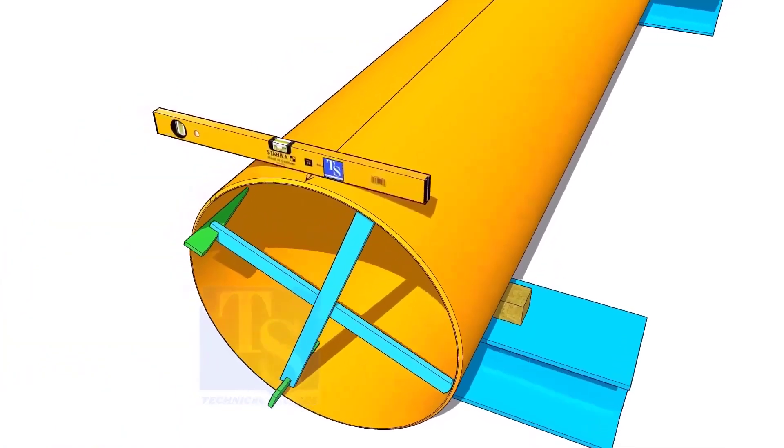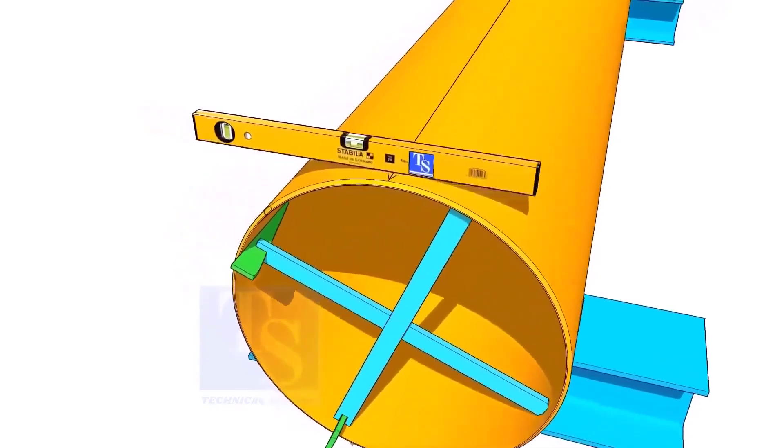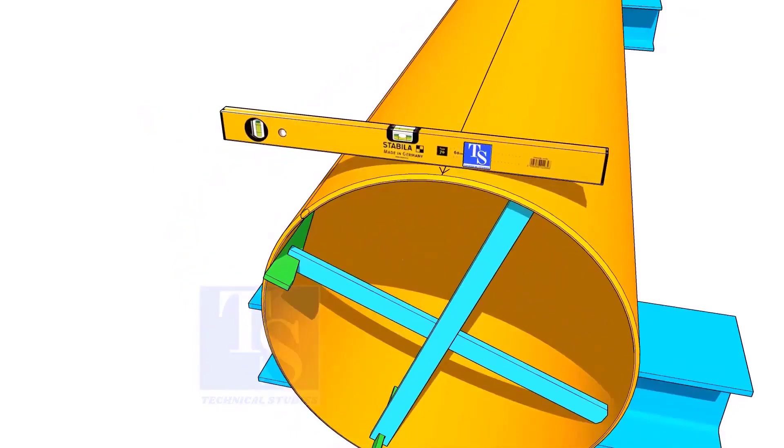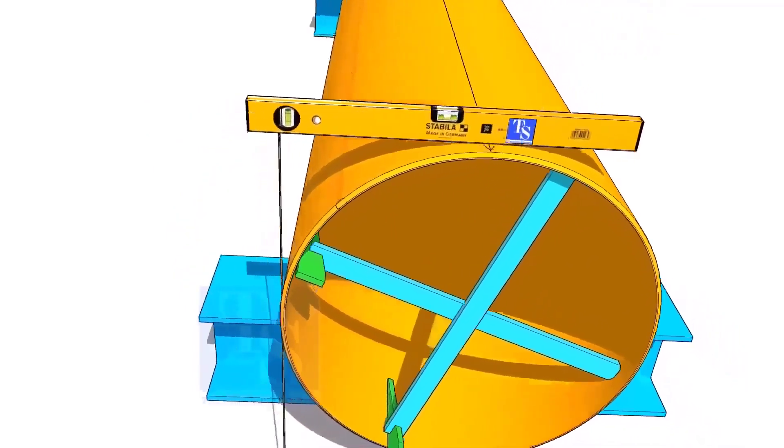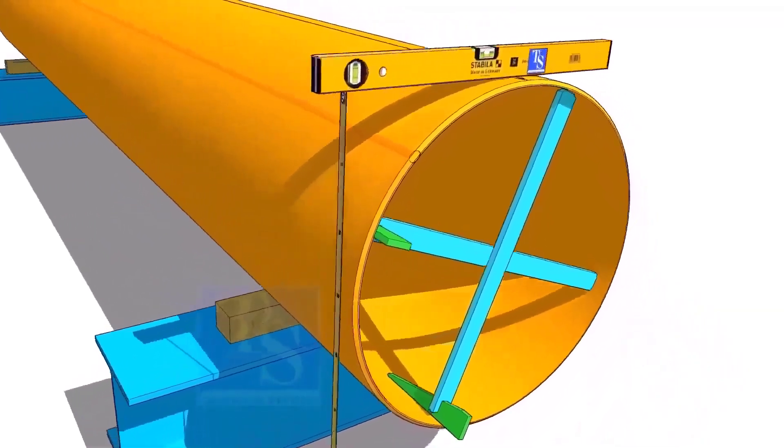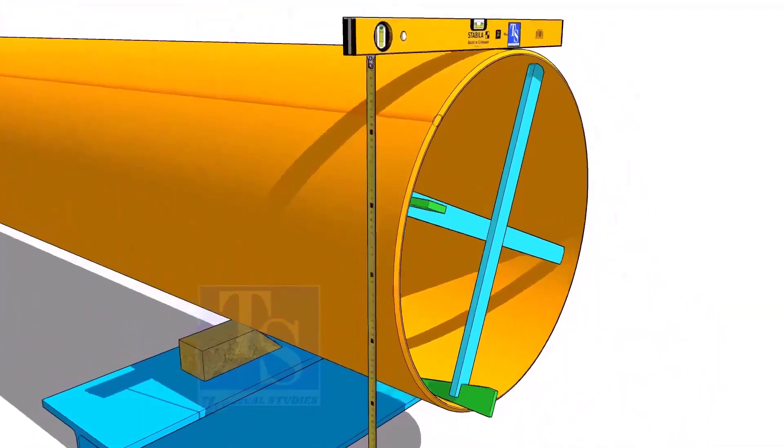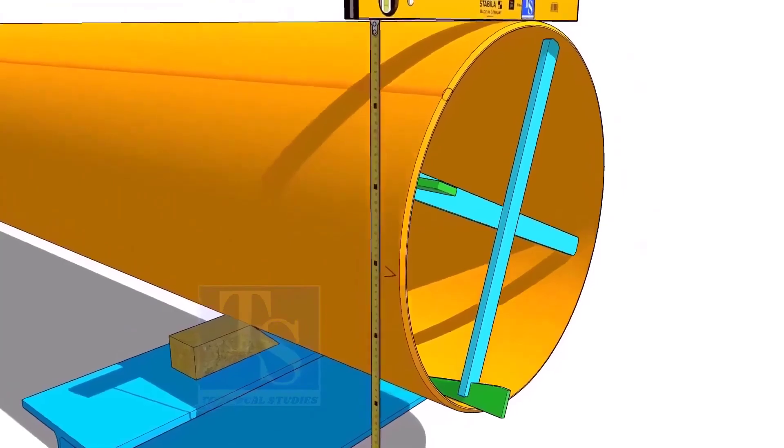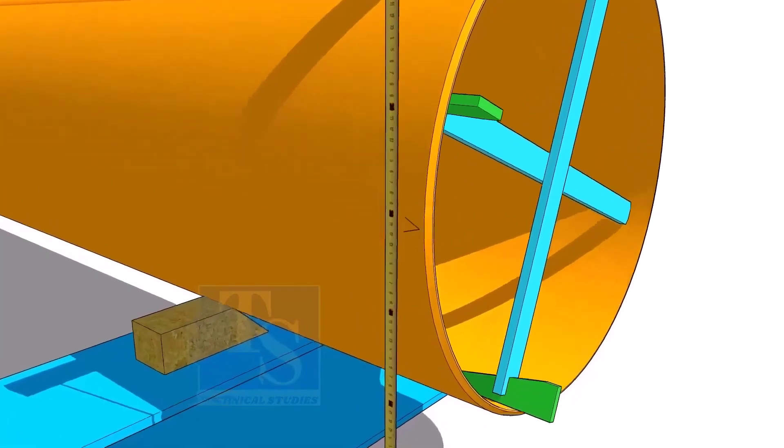Another method to mark the center line is to hold the level bottle horizontal and mark half OD on the side of the pipe. The advantage of this method is you can mark two opposite center lines at the same time.